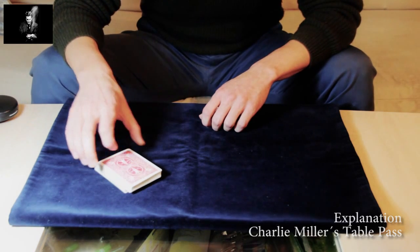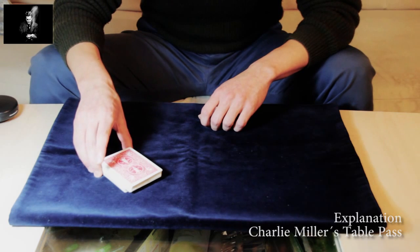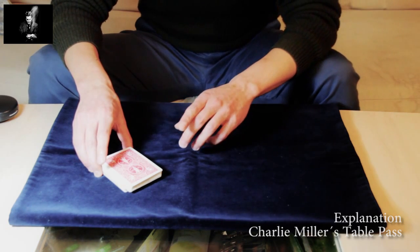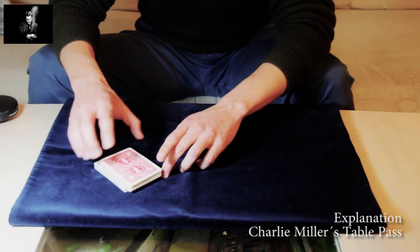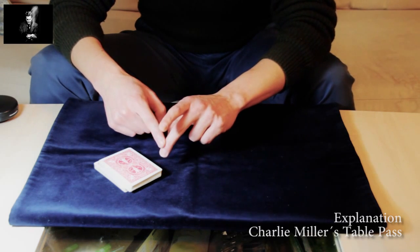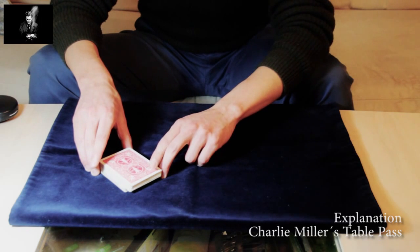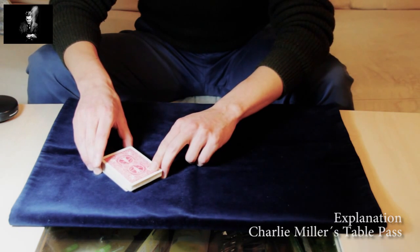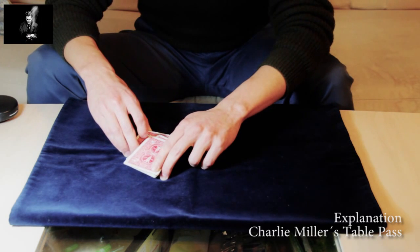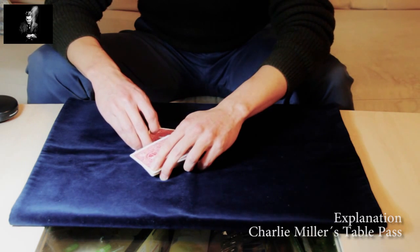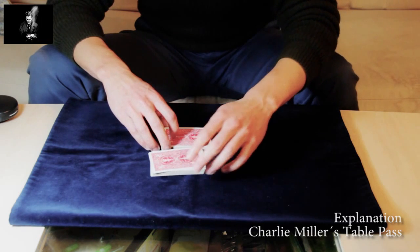Then with your right hand you grab the bottom part, and with your left hand you use your middle finger as the pivot point and with your first finger you just pinch it down so that the top packet can rotate.